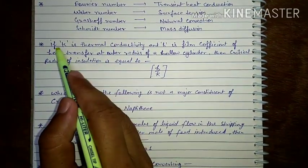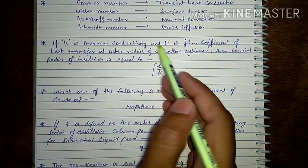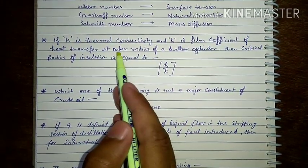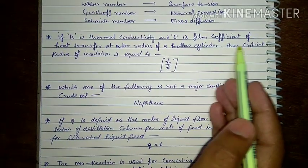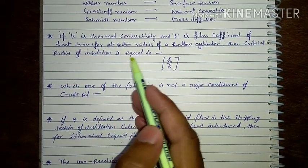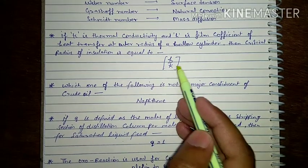Next question: If K is thermal conductivity and H is film coefficient of heat transfer at outer radius of a hollow cylinder, then critical radius of insulation is equal to H upon K.